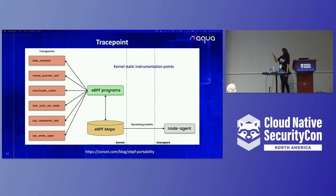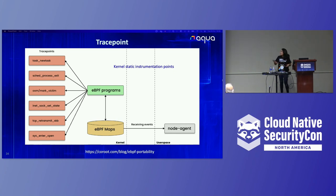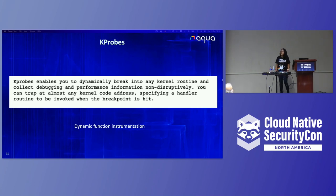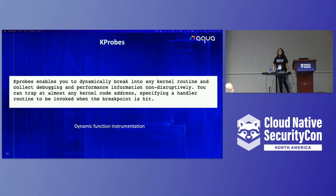The trace point is a static instrumentation point. You can instrument several things inside eBPF programs. When the events happen, it attaches these eBPF programs and starts filtering information. We also have kprobes. When you have both, you should prefer trace points because they're more stable. But in some use cases, you only have kprobe events that are only supported by kprobes — it depends on the type of event you want to filter.